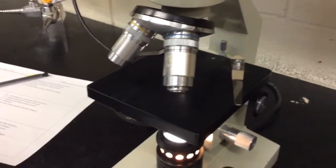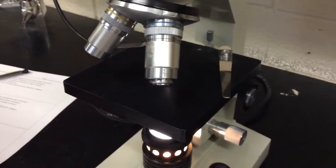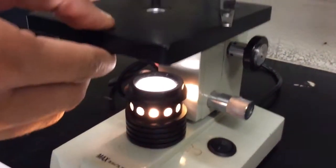Where should the stage be when you first start focusing? In the bottom, like down. All the way down? Sure. And how would you do that? With this thing. The coarse adjustment knob.